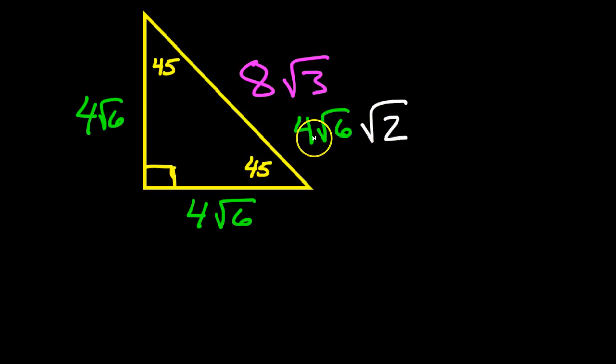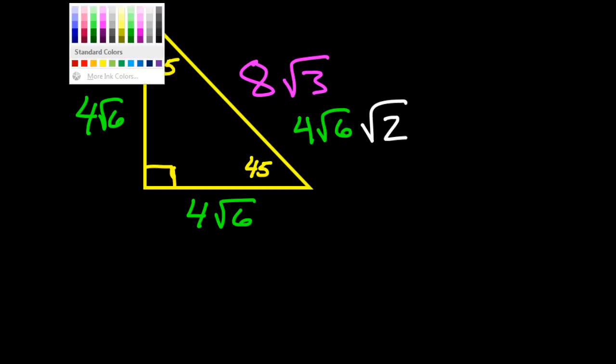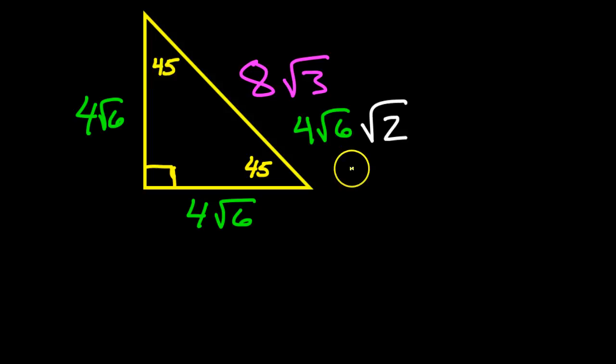Well, I have four times radical six times radical two. This would give me, I feel like I should change colors. This would give me four times radical 12. Hmm. So far, this is not looking like eight radical three. Did I make a mistake? Well, no, I didn't.